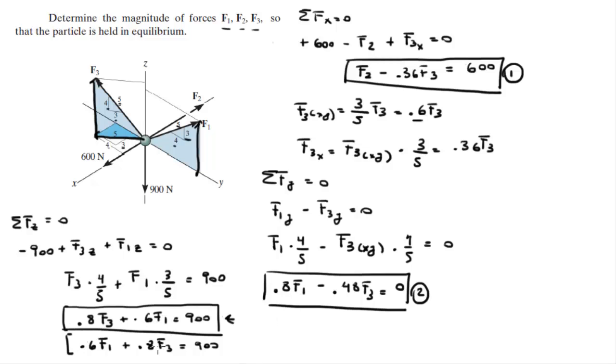I'm going to get this equation and multiply it. Actually, let me multiply it on this side because I want to use the other side. I'm going to multiply it by negative 0.8 over 0.6. So when I multiply each of these values by negative 0.8 over 0.6, this equation becomes minus 0.8F1 minus 1.07F3 is equal to negative 1,200.